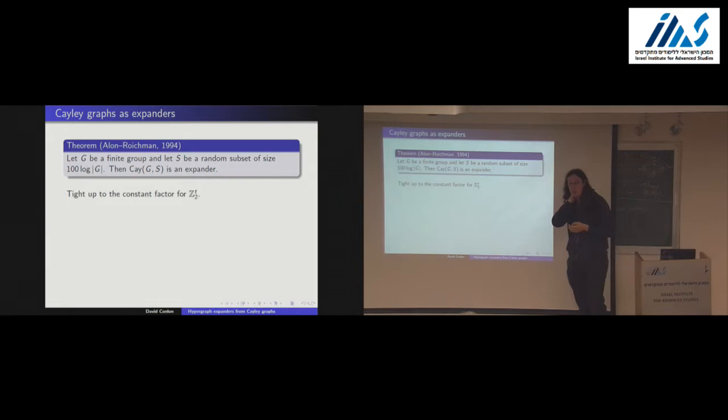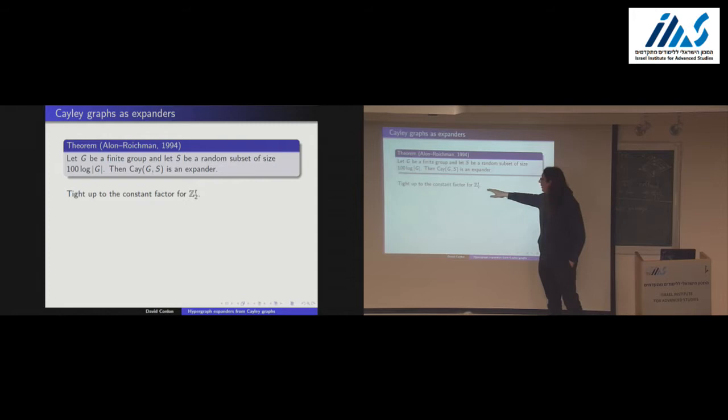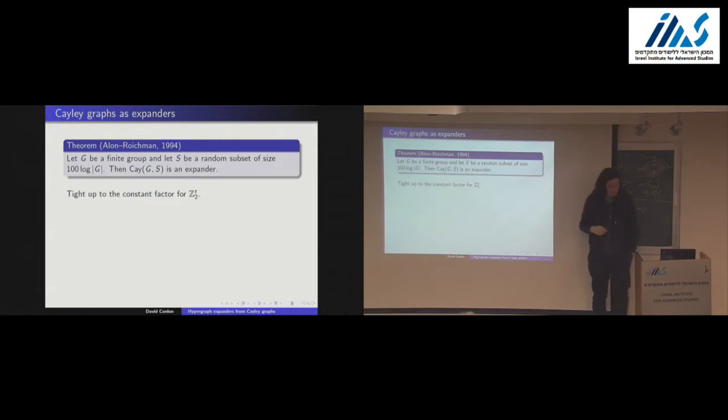This log factor is actually necessary in a lot of cases. For example, if you're working over Z_2^T, then you need at least T things to form a basis — so to even be connected you need at least T elements, which is logarithmically many. This says that just a little bit more than logarithmic size implies you're not only connected but actually an expander. So this result is essentially tight.